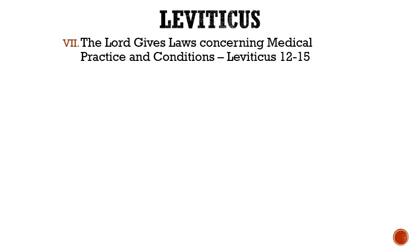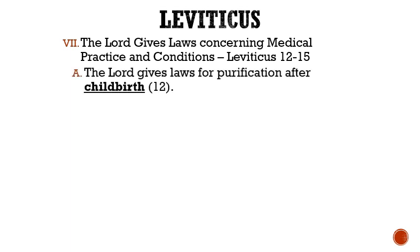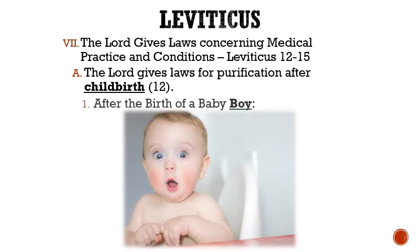Roman numeral 7: The Lord gives laws concerning medical practice and conditions. Letter A: The Lord gives laws for purification after childbirth. After the birth of a baby boy, the mom was considered unclean for 7 days. Then on the 8th day she was to bring the son to be circumcised. Then she would spend 33 more days for purifying and was not allowed in any holy place, making this a total of 40 days of purification.